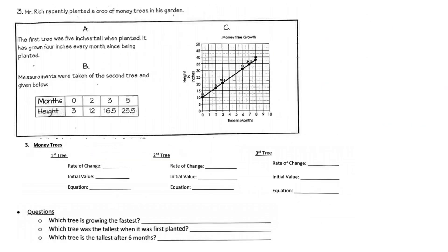Problem three: Mr. Rich planted a crop of money trees. Tree A was 5 inches tall when planted and has grown 4 inches every month. We pick out our pieces of information: the 5 inches is the initial value and the 4 inches per month is the rate of change. Using that, we write the equation: y equals 4x plus 5. M and x always go together, so the rate of change is 4; the initial value is 5.